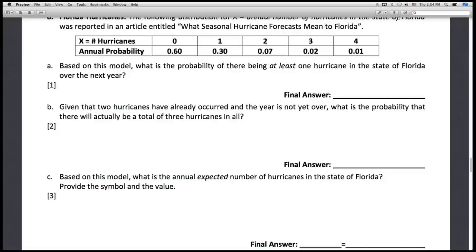We're looking at page 5 of the winter 2012 exam 1. Question number 8 is about hurricanes. We have a distribution for the number of hurricanes in a year for the state of Florida. We're supposed to use that model and work out the probability of there being at least one hurricane over the next year. At least one means one or more, so find the probability of that.